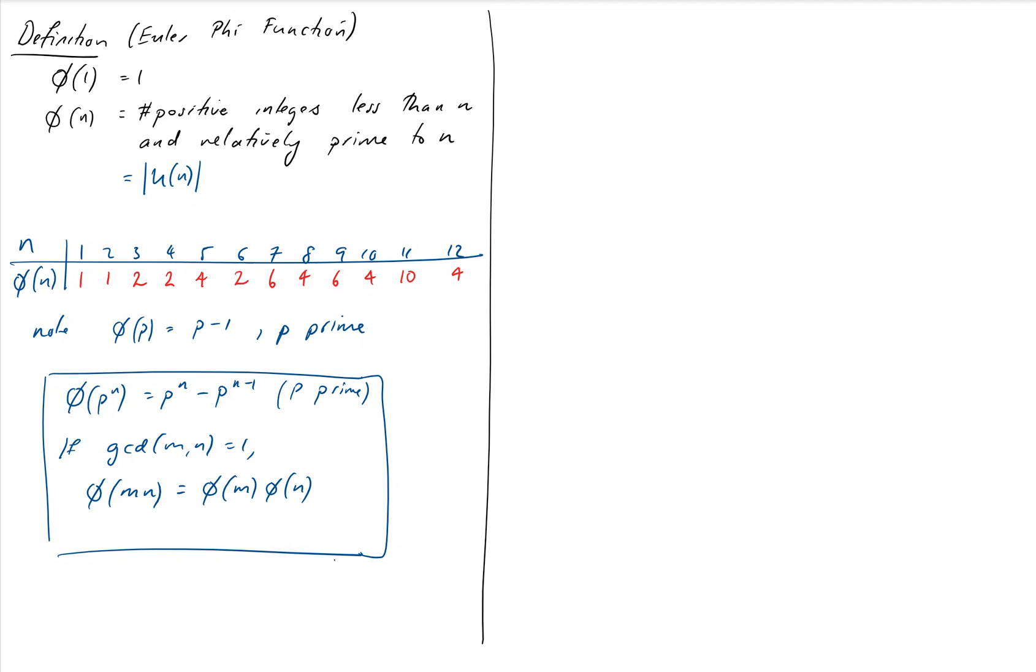So let's have a look at an example of how these things would work. Let's say we want to do phi of 360. Well, looking at our calculation tools here, we know how to do prime powers and we know how to do relatively prime. So if we perform the prime factorization of our number, then that will let us use these rules to split it up. So note that 360 is equal to 5 times 72, which is equal to 5 times 8, which is 2 cubed, times 9, which is 3 squared.